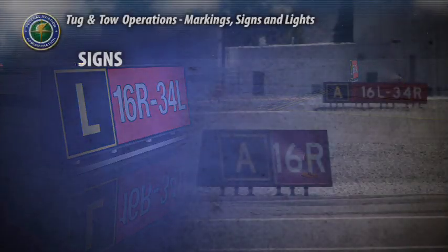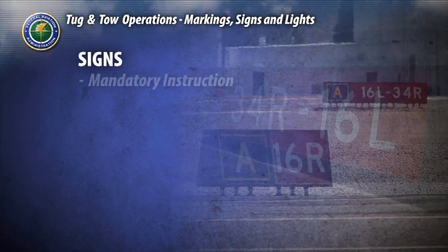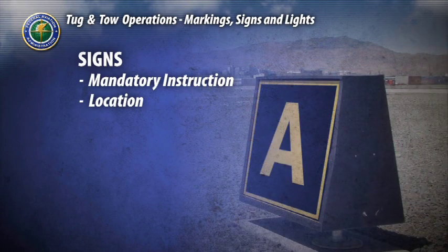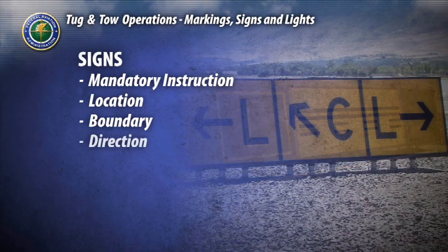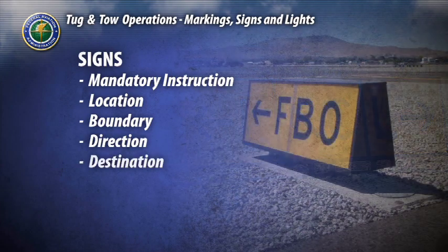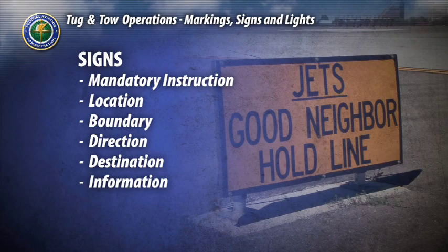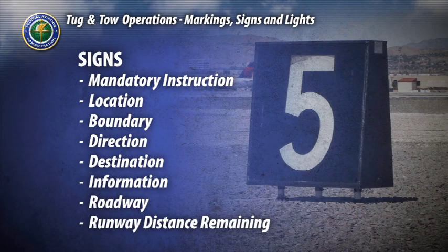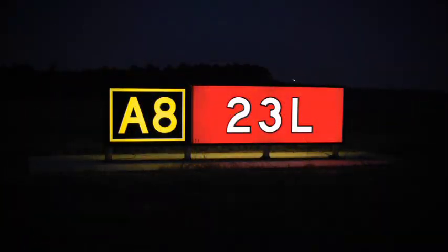There are eight main categories of sign types: mandatory instruction signs, location signs, boundary signs, direction signs, destination signs, information signs, roadway signs, and runway distance remaining signs. We'll examine the signs in each category you'll need to know.